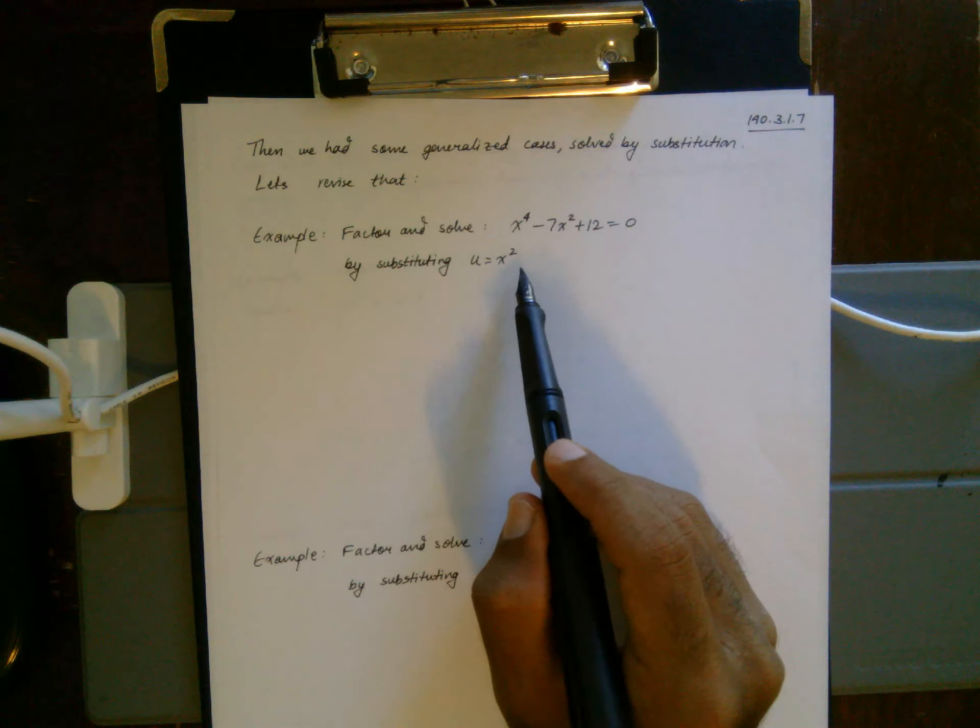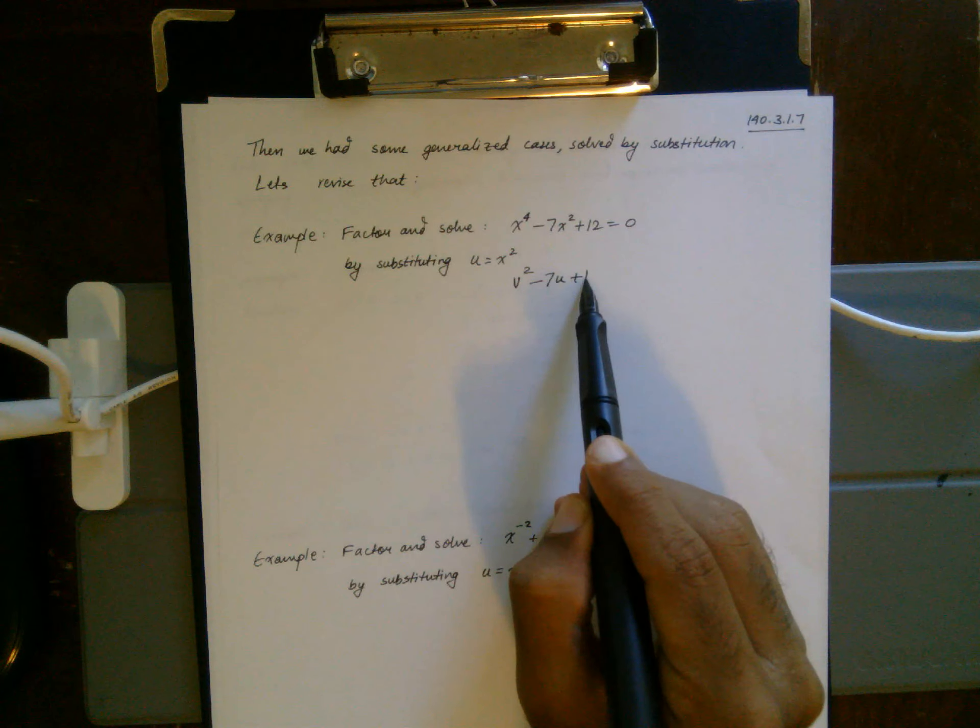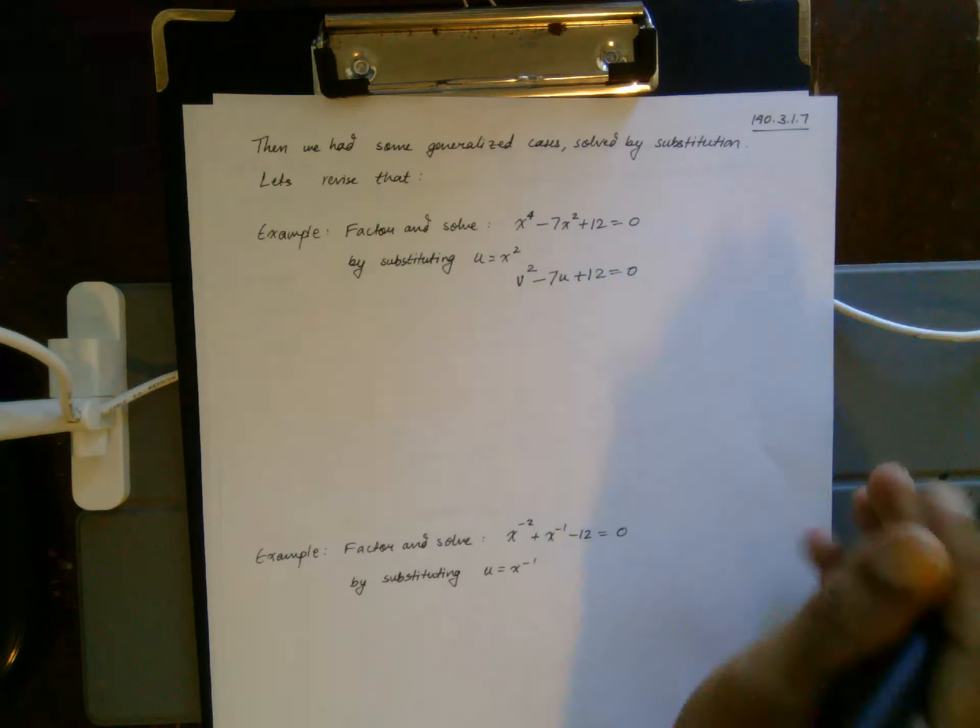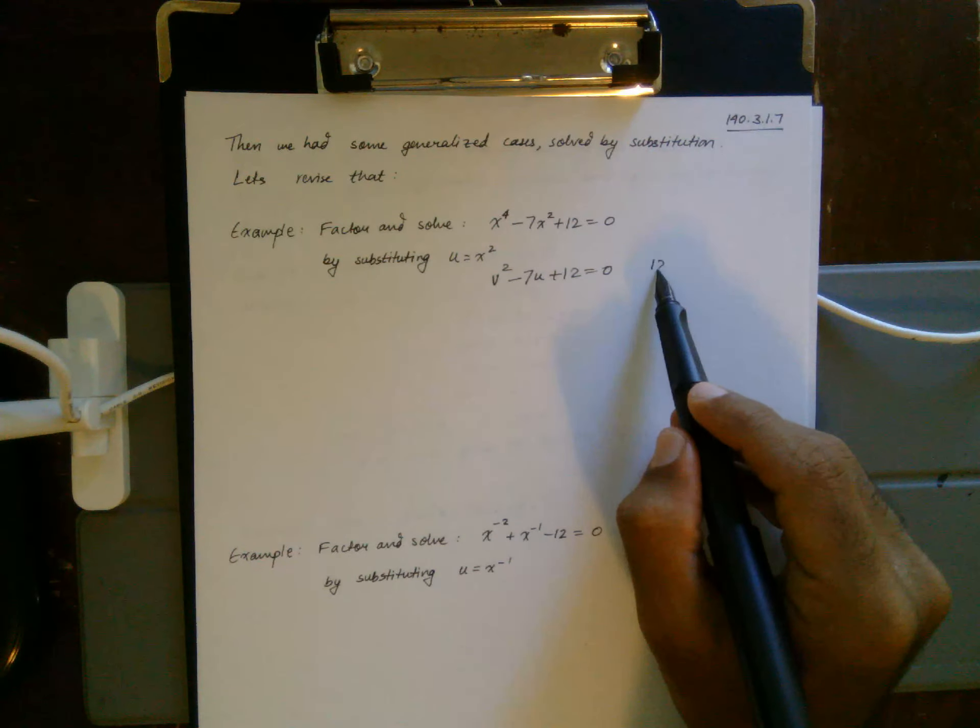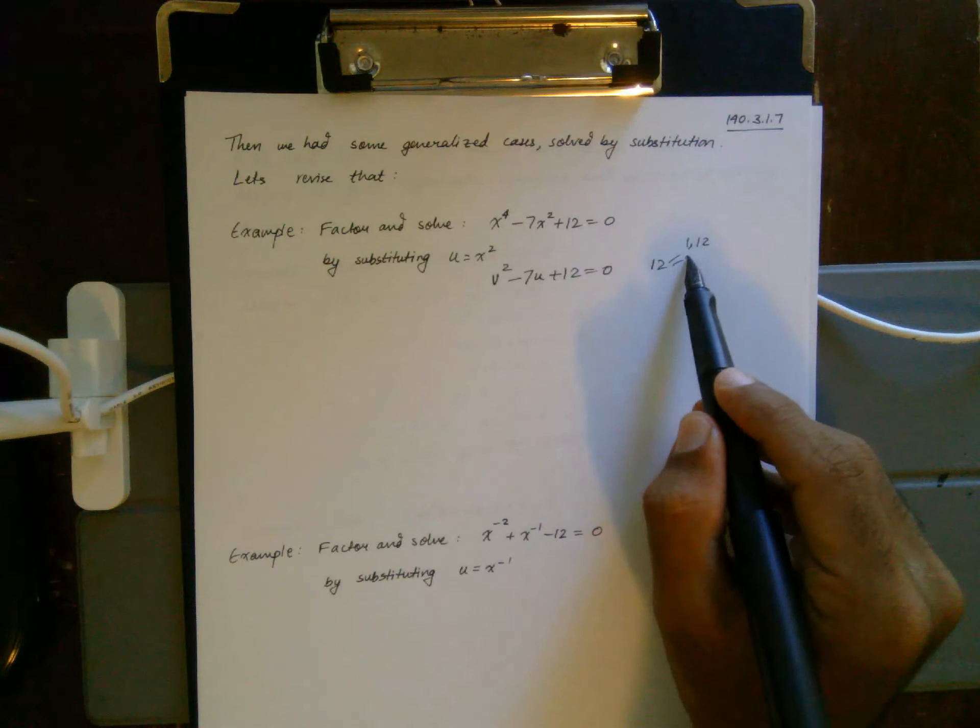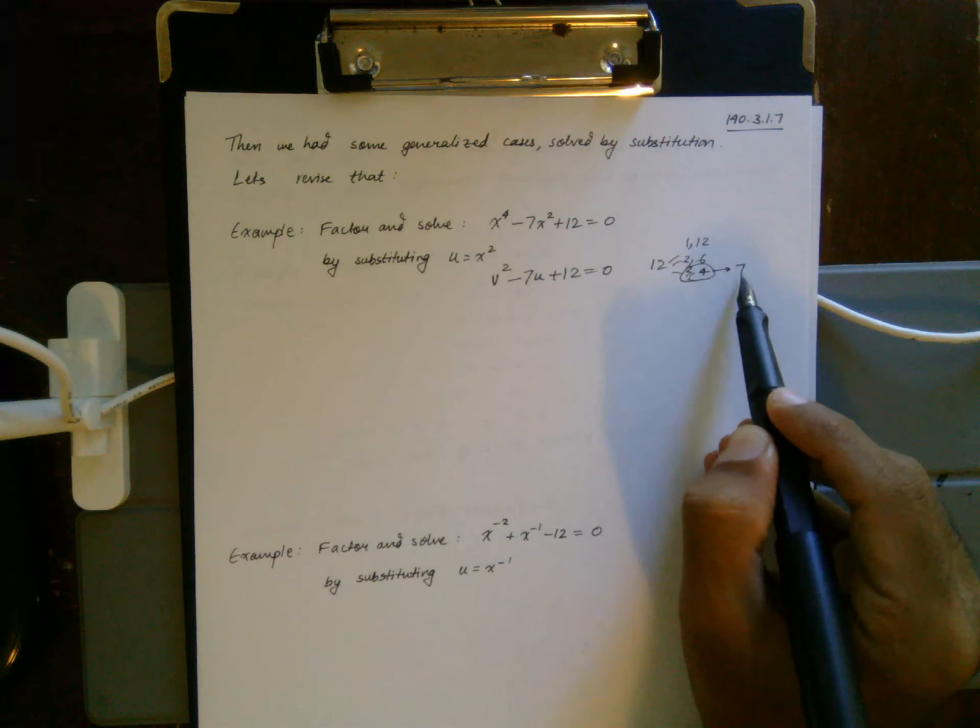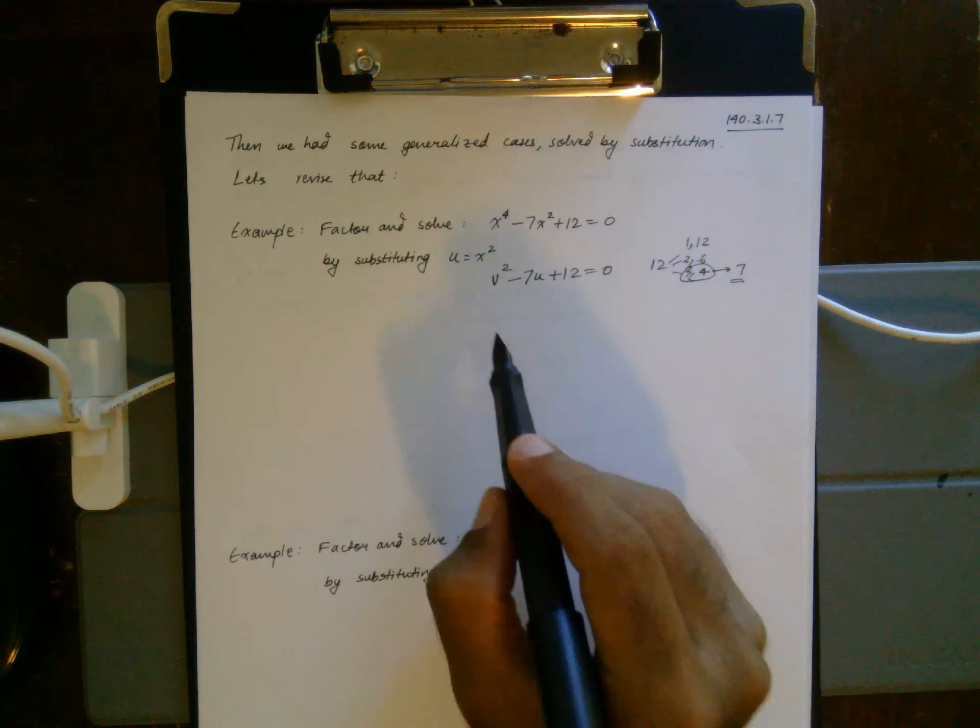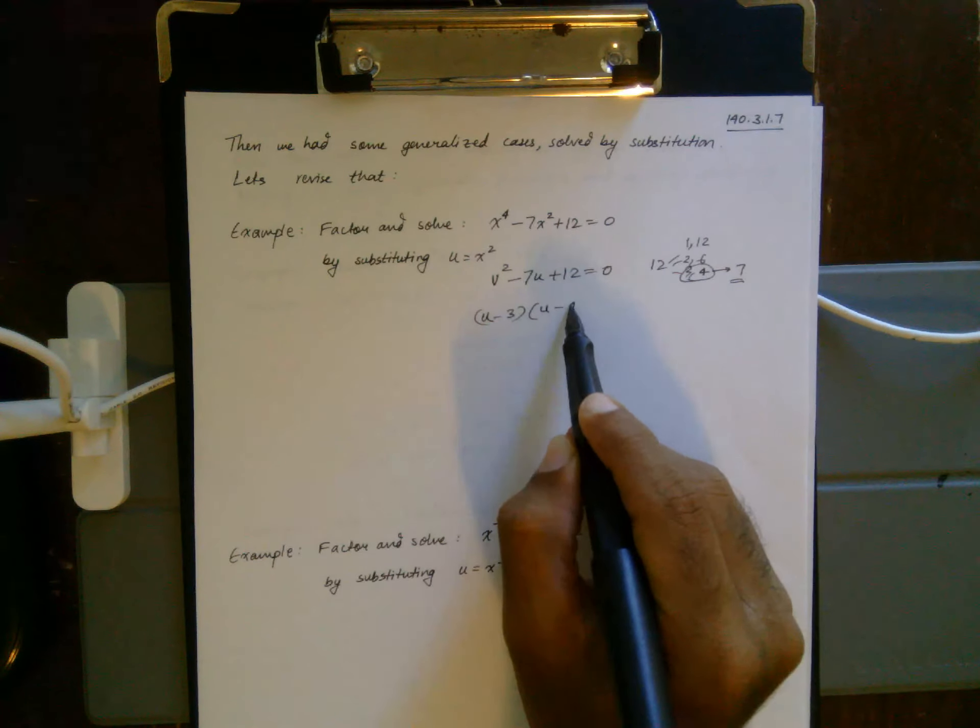Then you look at how can you get a product of 12: you have 1 and 12, 2 and 6, 3 and 4. You can stop there because 3 plus 4 is 7. This means this is going to factor as (u minus 3)(u minus 4).